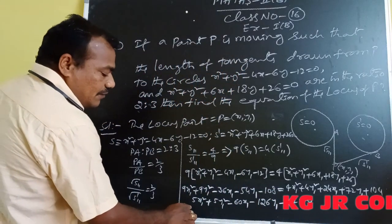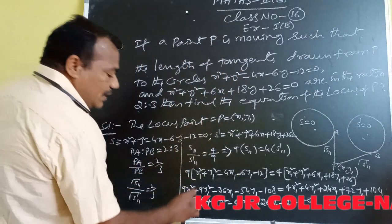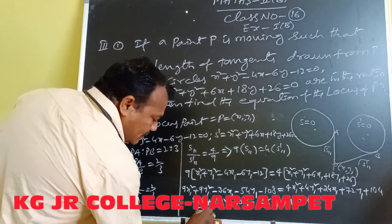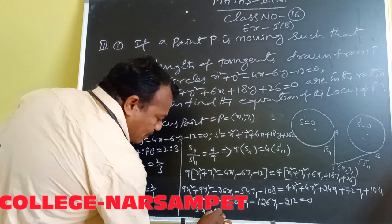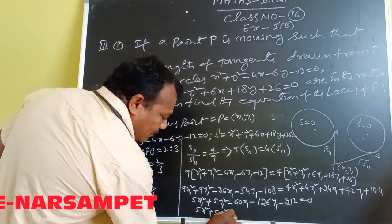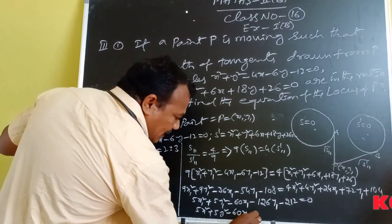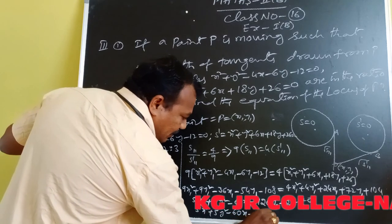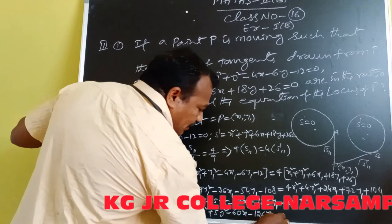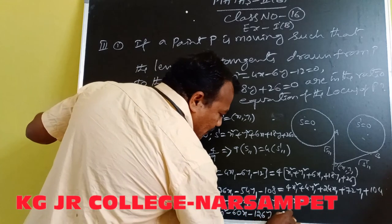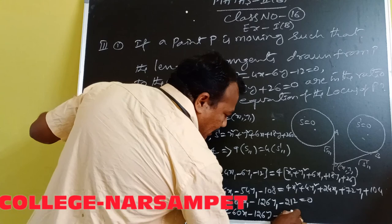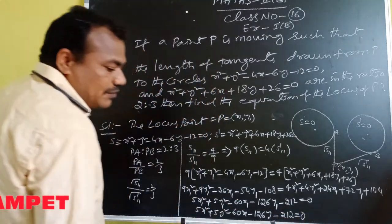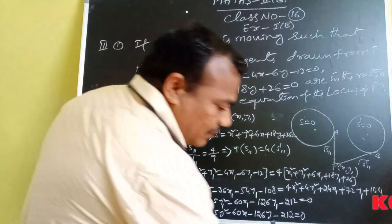Finally, the locus equation of P is given by: 5x² + 5y² - 60x - 126y - 212 = 0. This is the required equation of the locus of point P for the given condition that the ratio of the lengths of the tangents drawn from P to both circles is 2:3.